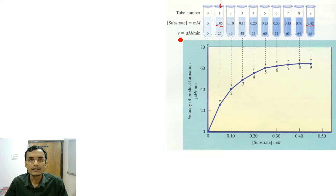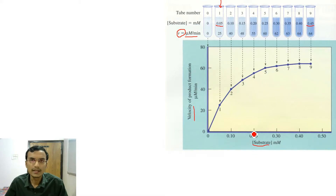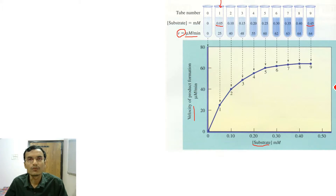We will be increasing substrate concentration in each test tube by 0.05 mM, reaching 0.45 mM in the last test tube. When substrate is added, the enzyme starts converting substrate into product, and we measure the initial velocity (V or V₀) in micromolar per minute. We then plot velocity versus substrate concentration, obtaining a hyperbolic curve characteristic of enzymes following Michaelis-Menten kinetics. Allosteric enzymes, which do not follow Michaelis-Menten kinetics, will not give this kind of curve.